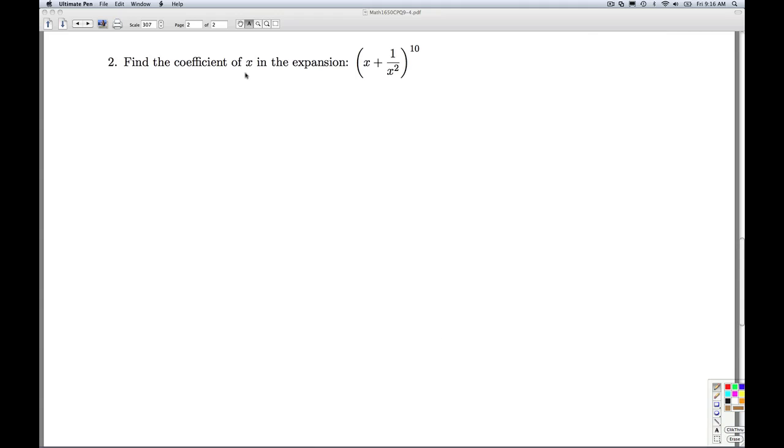Alright, number two, we're asked to find the coefficient of x in the expansion x plus 1 over x squared to the tenth. So there's lots of inefficient ways to do this. The most efficient way to do this is to make use of the binomial theorem.